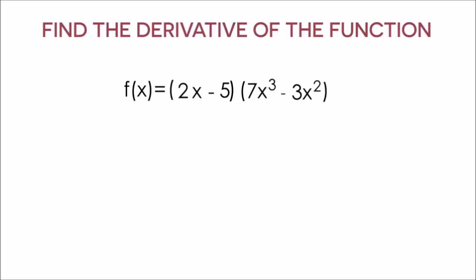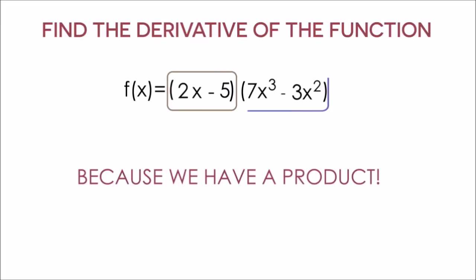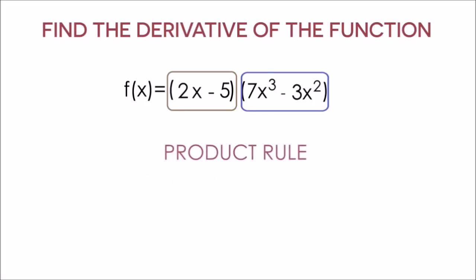And the first thing I want to talk about is why we need to use the product rule. And the simple answer to this question is because we have a product. Anytime we have two things being multiplied with each other, we have to use the product rule to take the derivative.